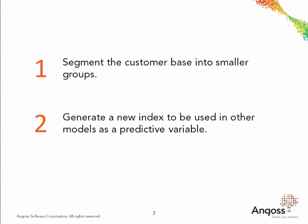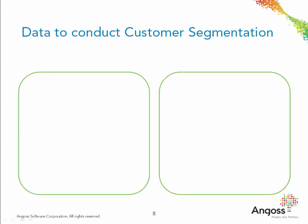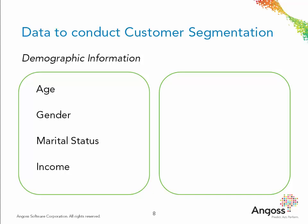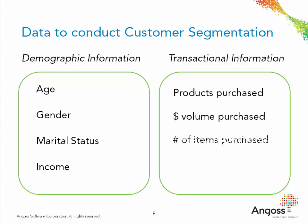For example, when we use the variable segment number, the value equivalent to the student segment will always have young age and low income. Data for customer segmentation can include many attributes. For segmentation to be effective, data needs to contain demographic information such as age, gender, marital status, and income, as well as transactional information such as products purchased, dollar volume, number of items purchased, or time of day they were purchased.